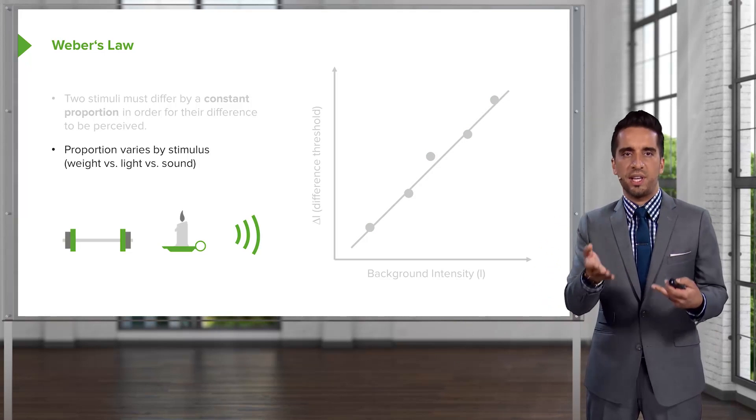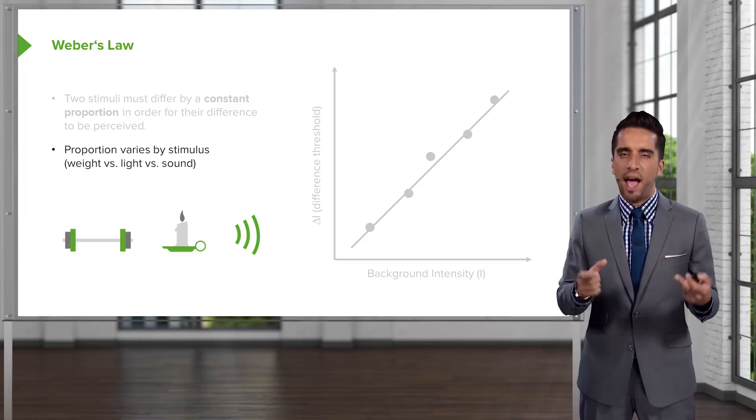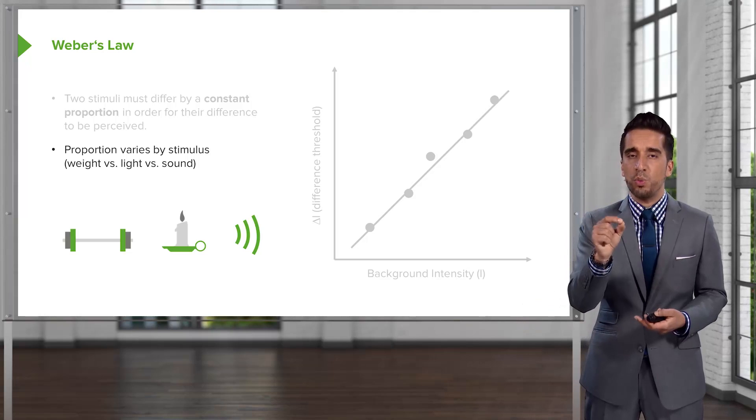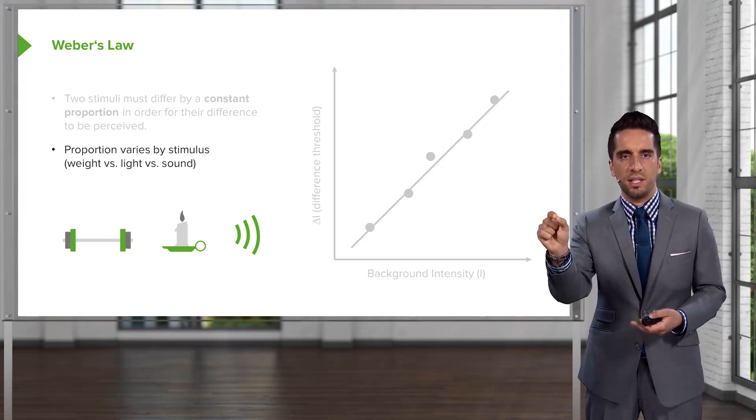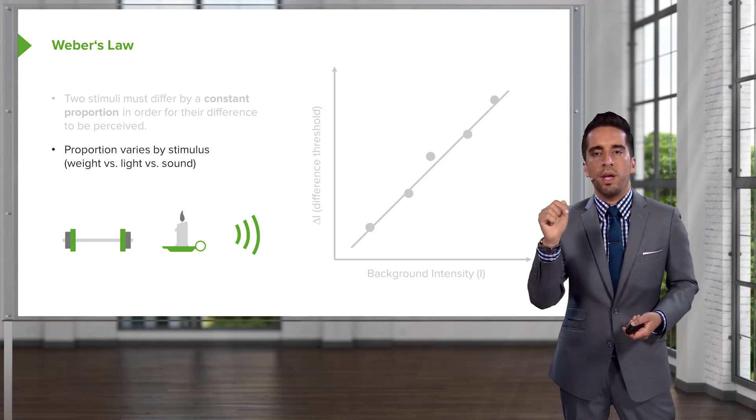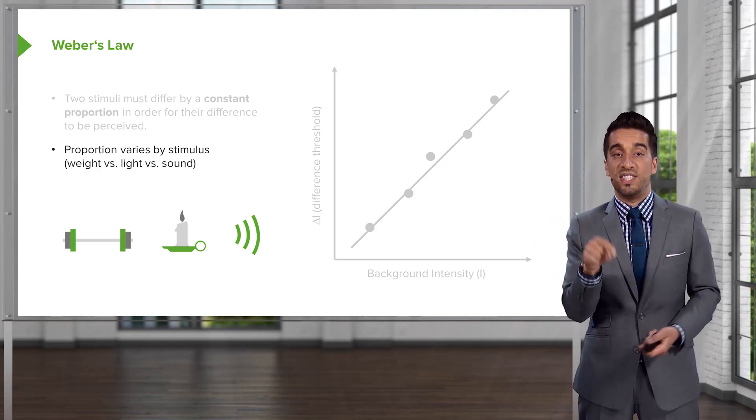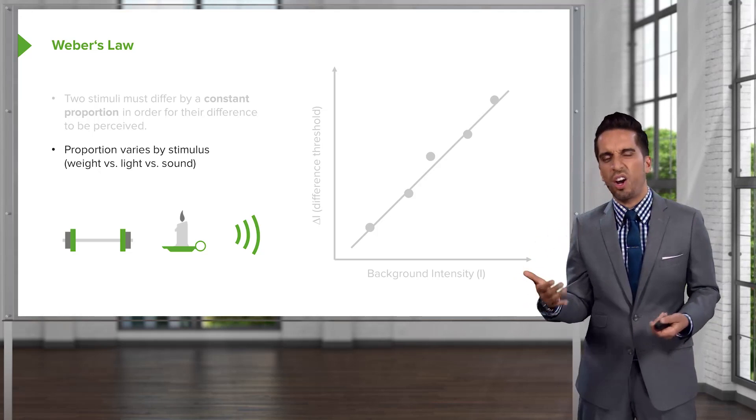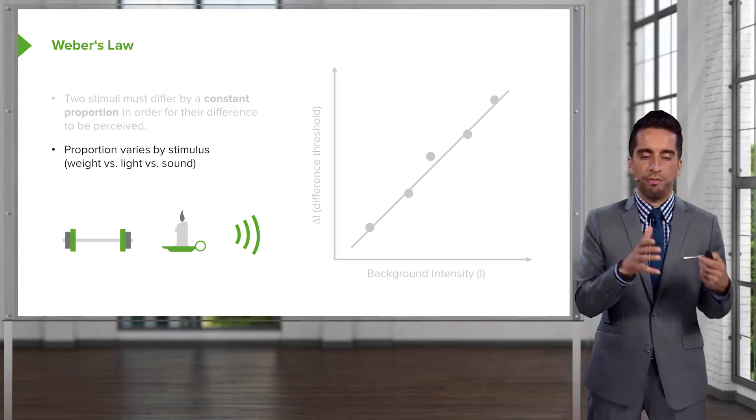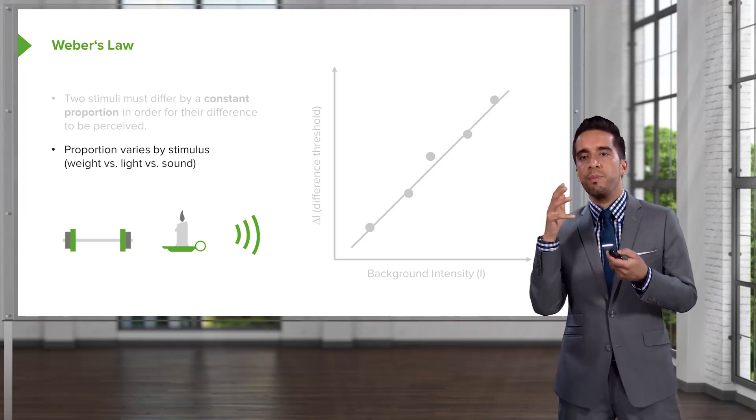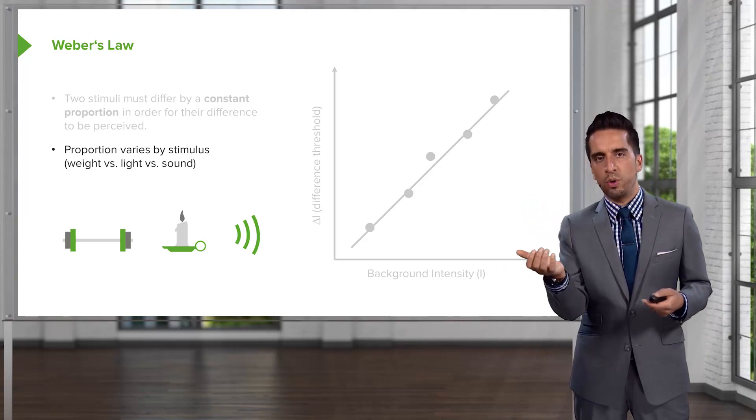So, weight versus light versus sound, you're going to have differences, but the proportion within each medium is consistent. So if you're starting with five pounds and I change that to 5.01 pounds, you're probably not going to notice that difference. But if I go from five pounds to five and a half pounds, you might notice that.